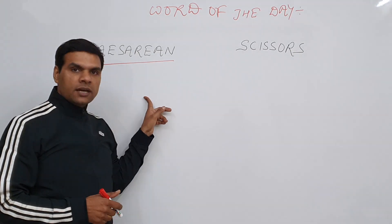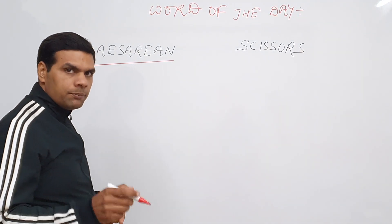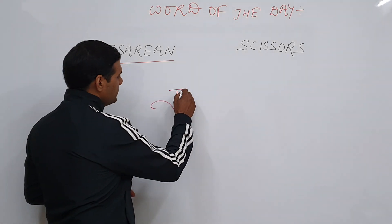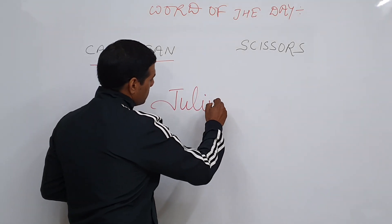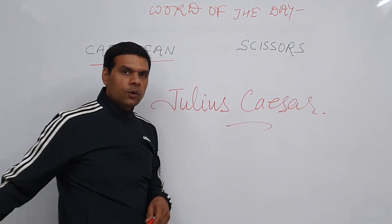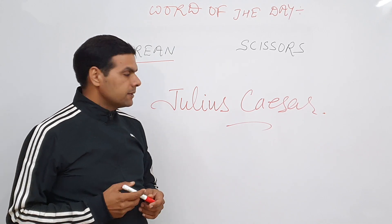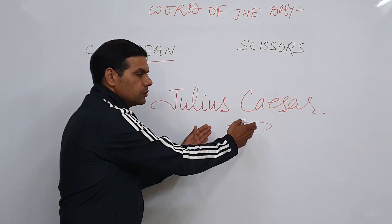This word caesarean comes from a Roman emperor whose name is Julius Caesar, a very famous emperor in the history of the Roman Empire. So how does this word come from Julius Caesar?